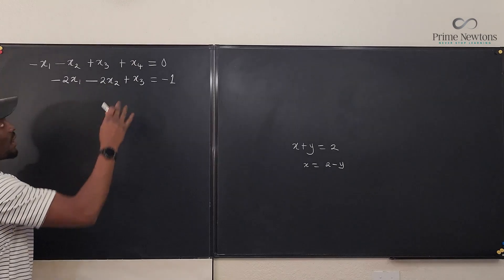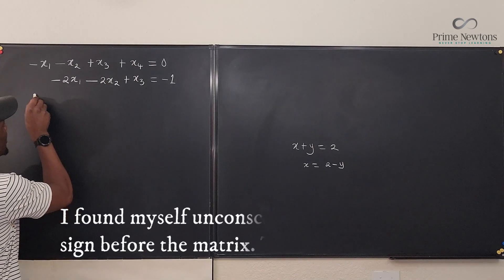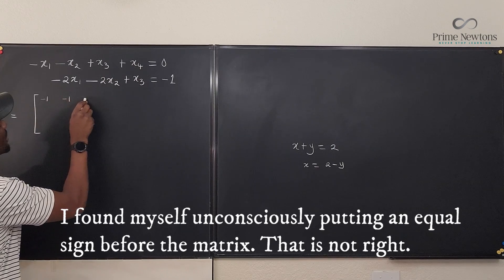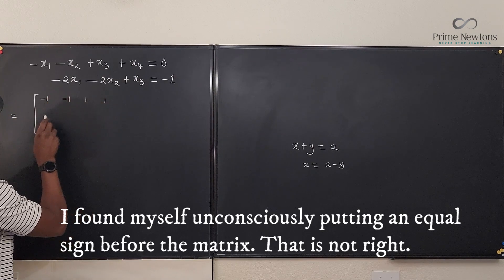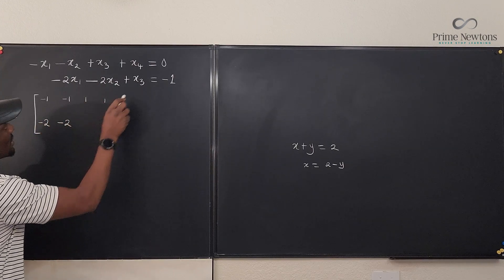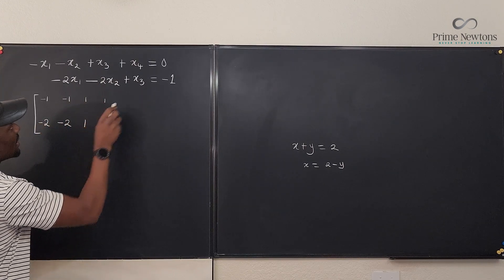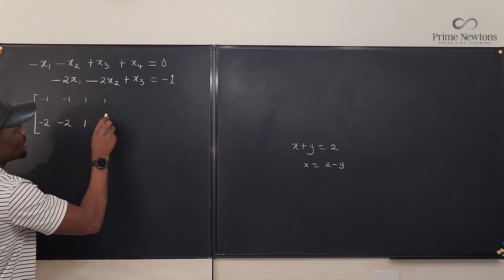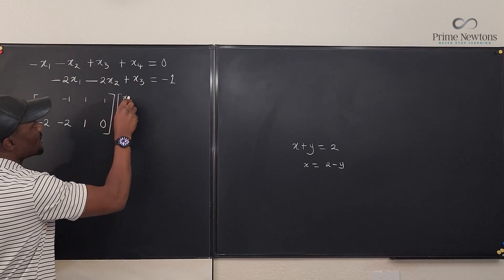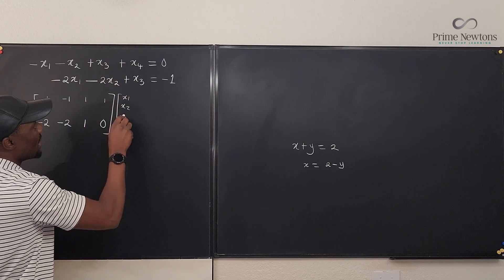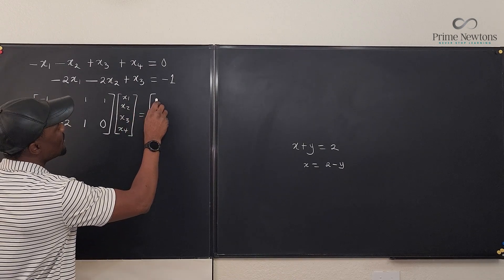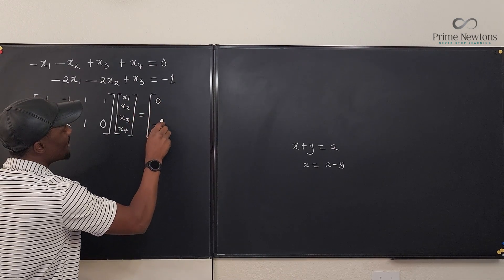So what I'm going to do is write down the coefficient in a matrix form. So this would be minus one, minus one, one, one. And under it, I'm going to write minus two, minus two, one. But there's nothing for x4 in the second one. So I'm going to write zero. I know that if I multiply this by all the variables x1, x2, x3, x4, I'm going to get zero and minus one.